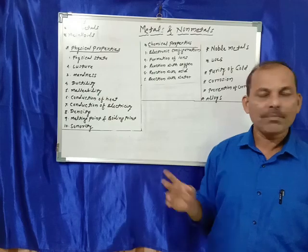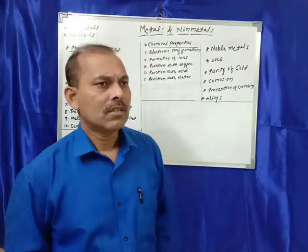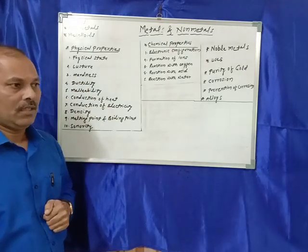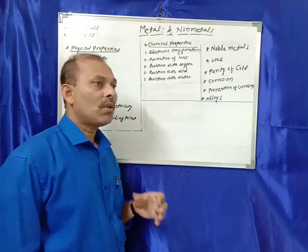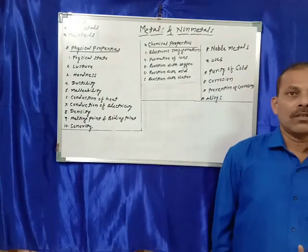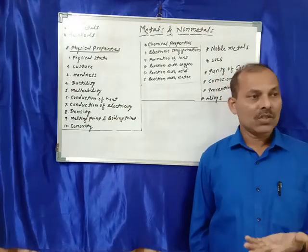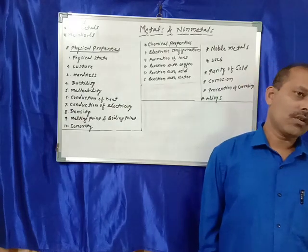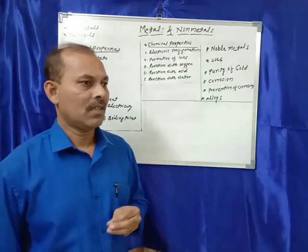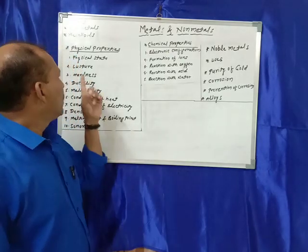Now we will see the physical properties of metals and non-metals. First, the physical state: most of the metals are in solid state. Non-metals are generally in solid, liquid, or gaseous state. Most metals are in solid state except mercury, which is present in liquid state.